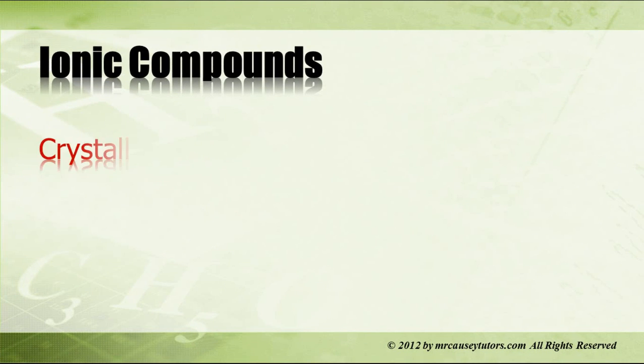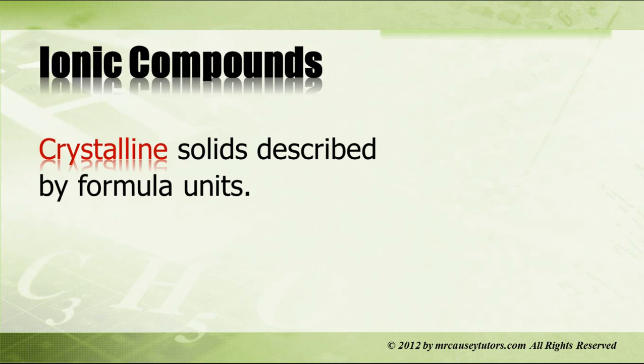But what about ionic compounds? Ionic compounds turn to be crystalline solids described by formula units. And a formula unit is the simplest form of ionic compound. Ionic compounds don't make molecules, and they are crystalline solids that make basic shapes, and really don't have a molecule. So we don't say molecule with ionic compounds. We say formula unit.